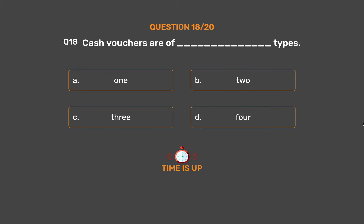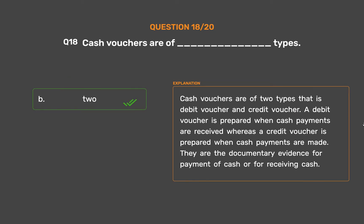The correct answer is option B: 2. Cash vouchers are of two types — debit voucher and credit voucher. A debit voucher is prepared when cash payments are received, whereas a credit voucher is prepared when cash payments are made. They are the documentary evidence for payment of cash or for receiving cash.